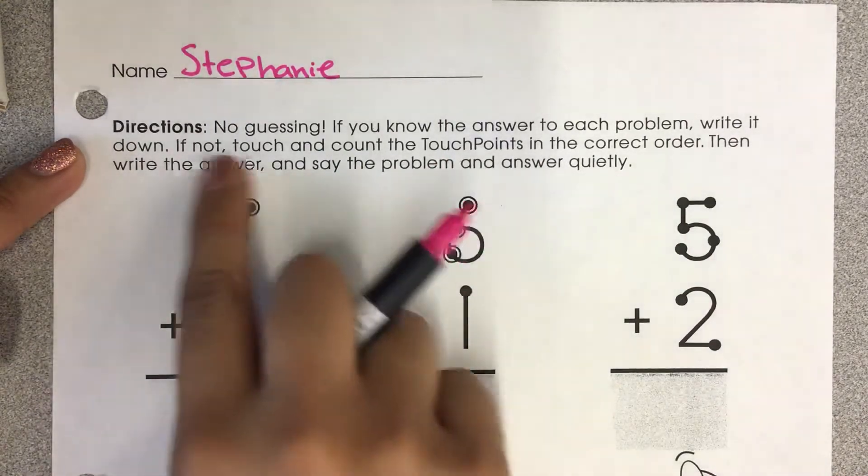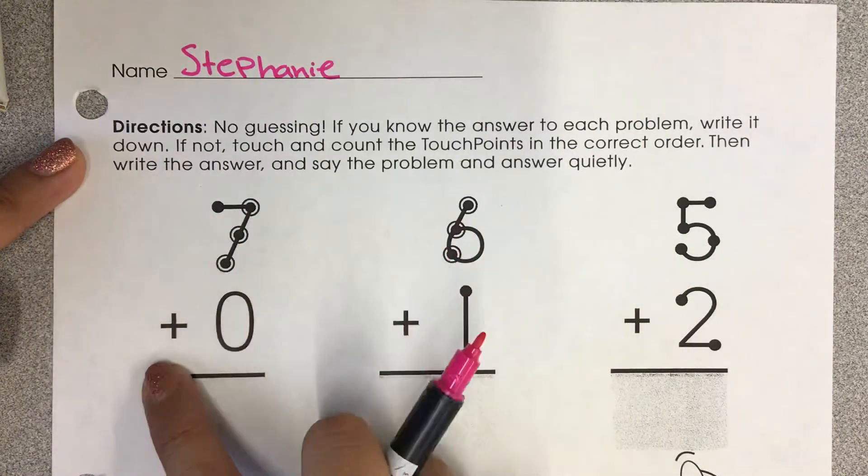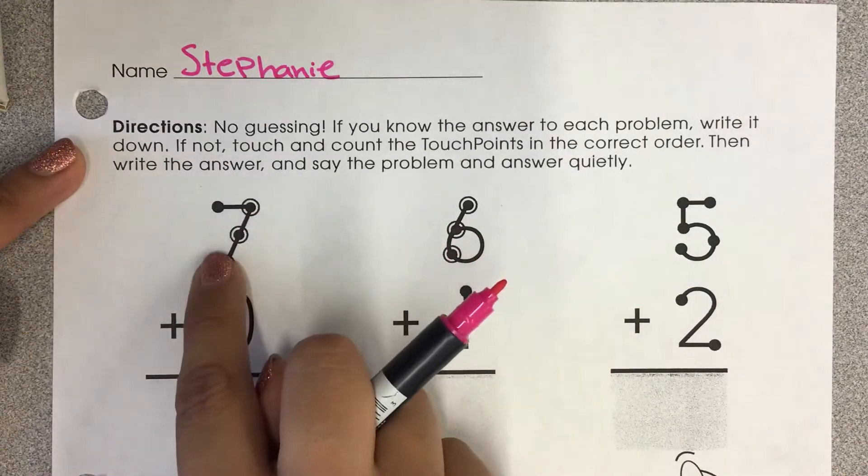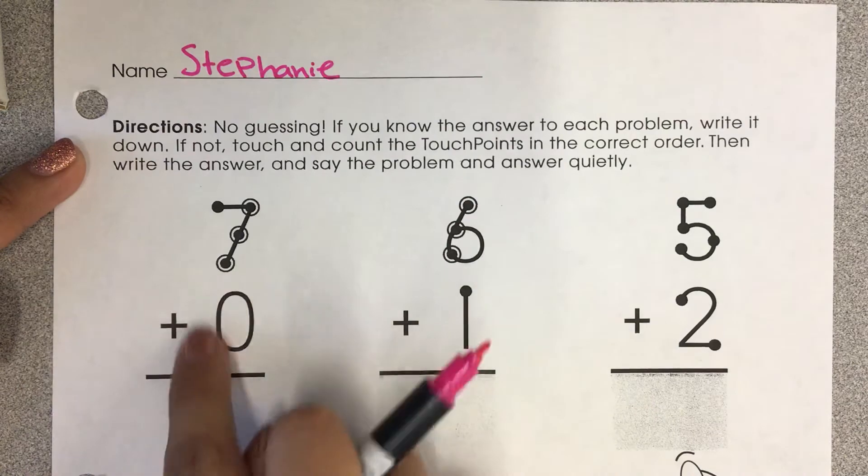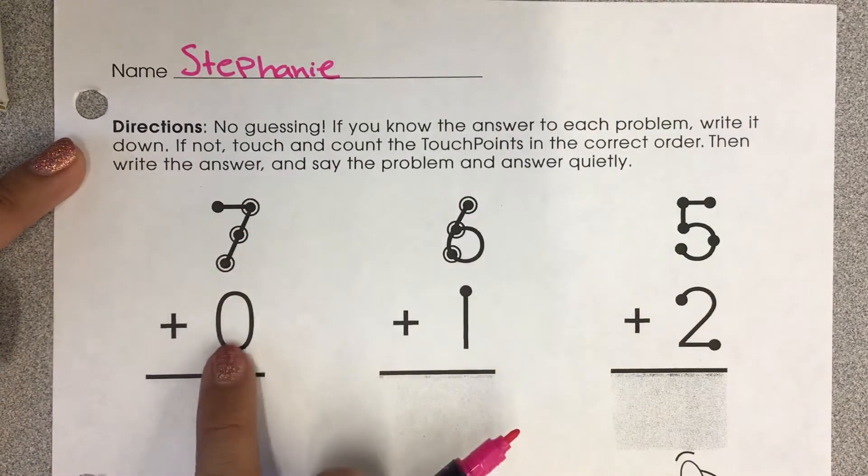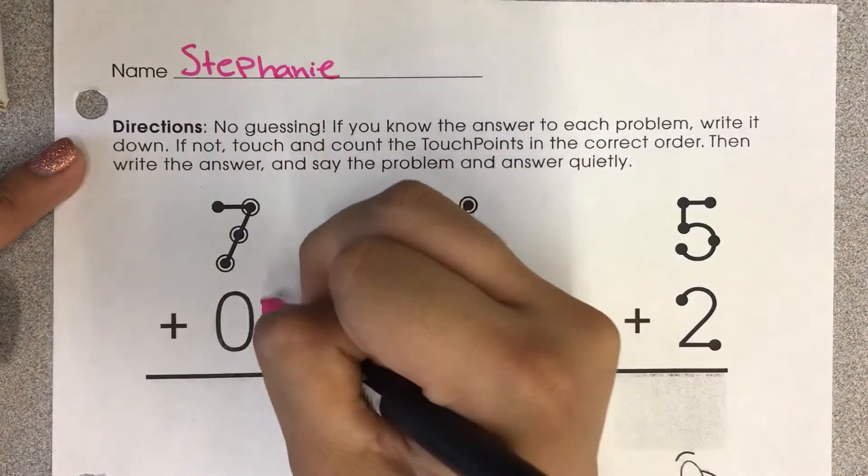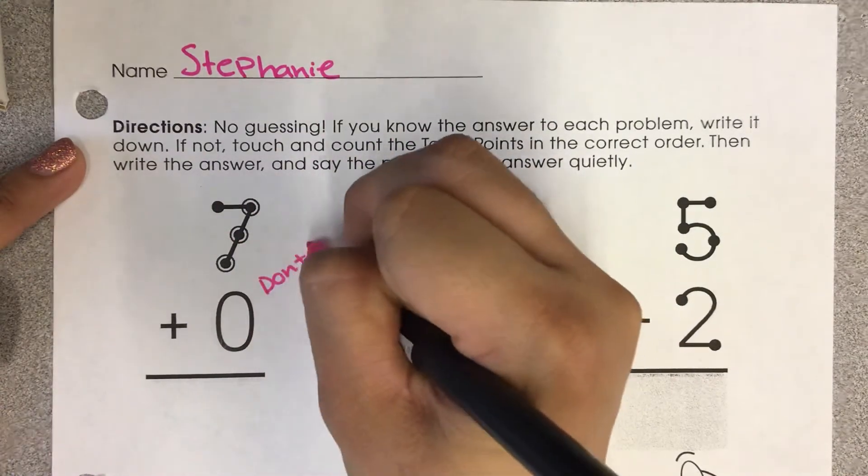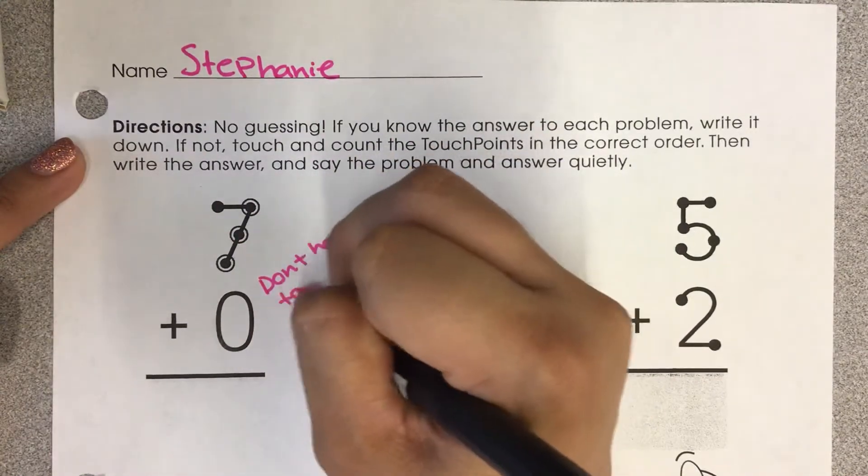So we're going to go ahead and start with this problem right here. This is a 7 and this is a 0. So you see the 7 has its touch points, but the 0 doesn't because zeros don't have touch points.